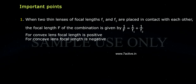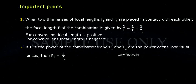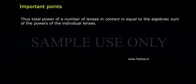For convex lens, focal length is positive. For concave lens, focal length is negative. If P is the power of the combination and P1 and P2 are the power of the individual lenses, then P1 equals to 1 by F1 and P2 equals to 1 by F2. P equals to 1 by F, P equals to P1 plus P2.